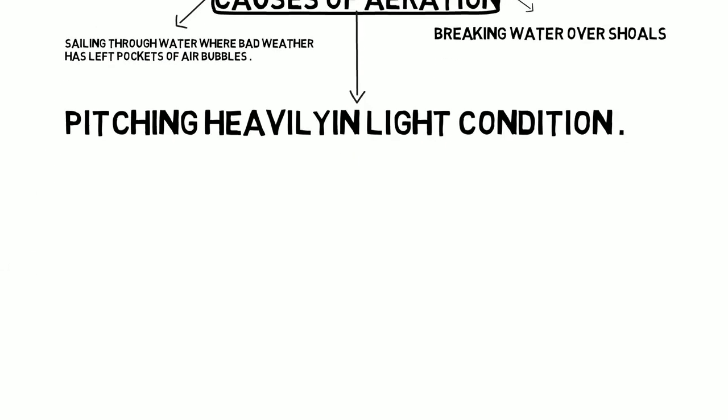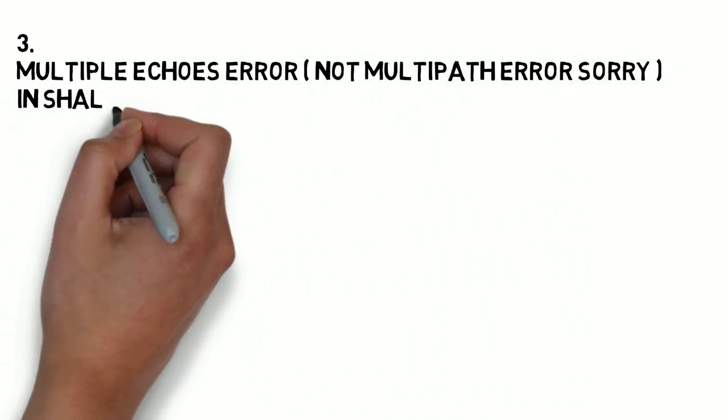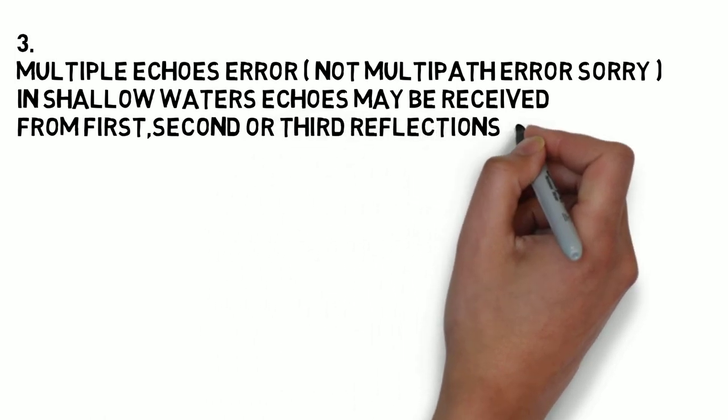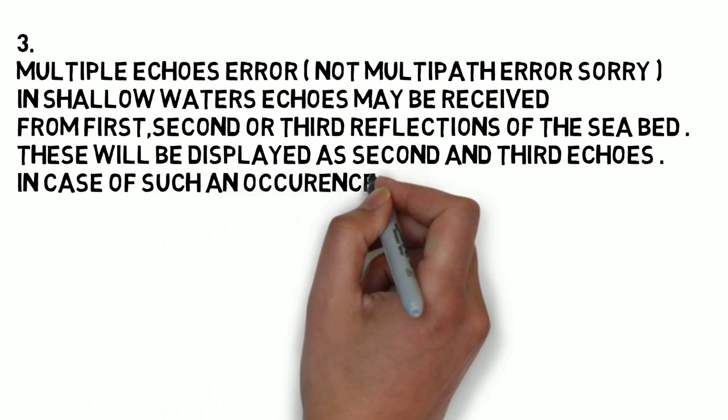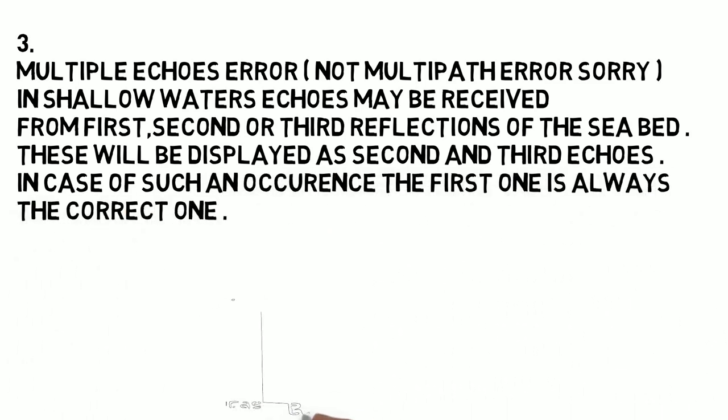The third error is the multipath error. In shallow waters, echoes may be received from first, second, or third reflection of the seabed. These will be displayed as second and third echoes. In case of such an occurrence, the first echo is always the correct one.